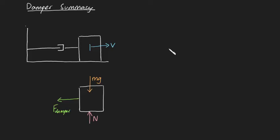This force resists velocity and is given by this formula. F damper is equal to minus CV.